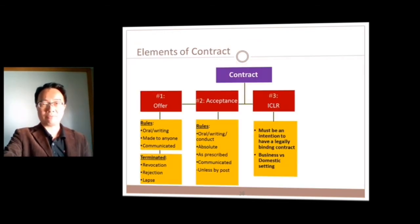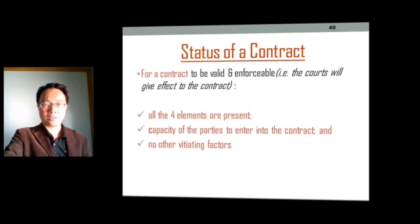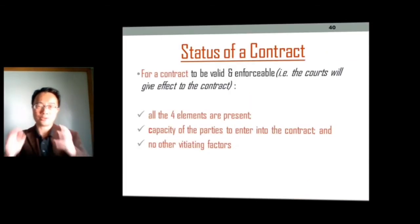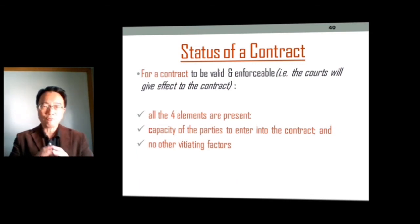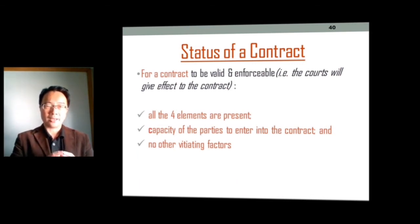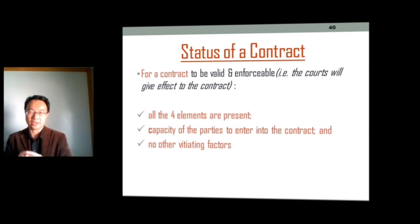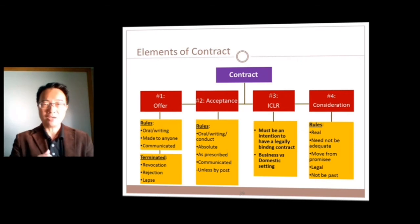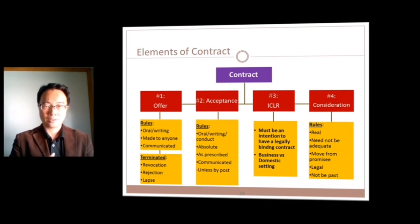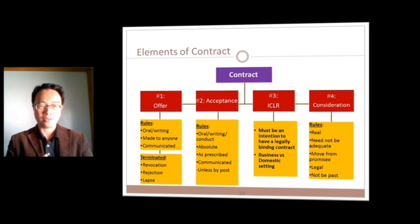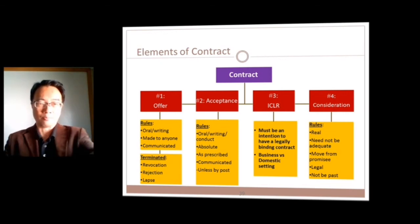So here you have the four elements of contract. In order for a contract to be valid and enforceable, you need all four elements: offer, acceptance, intention to create a legal contract, and consideration. The parties must also have the capacity to enter the contract, and there must be nothing to overcome it. This is the end of part 1 — continue watching and we'll go to part 2.